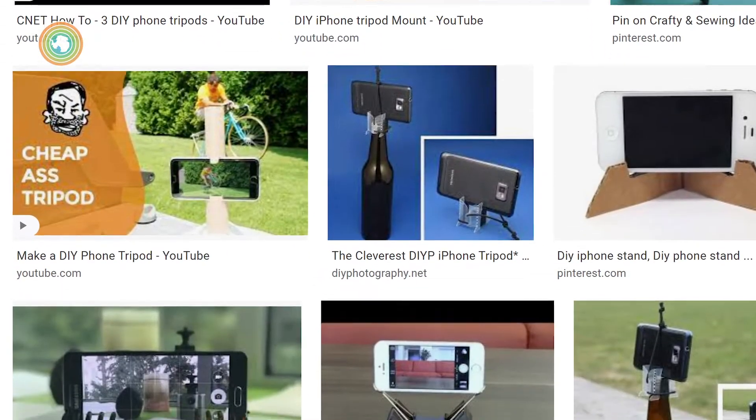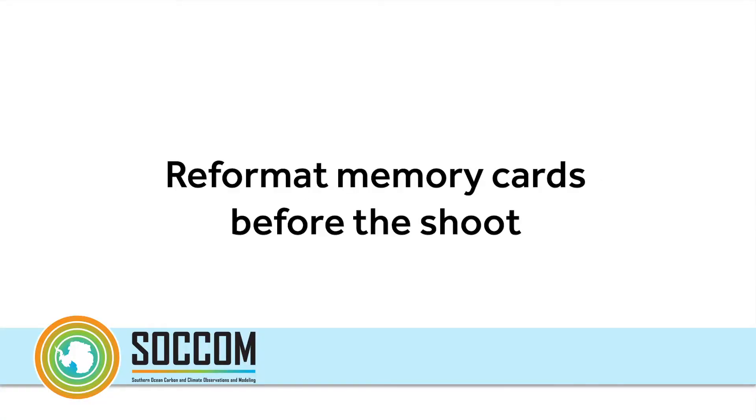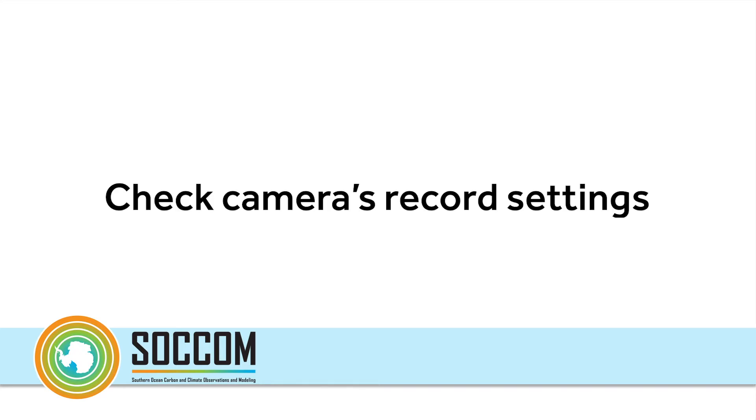Next, you'll need to stabilize your camera. Remember, no handheld footage. If you have a tripod, you're all set. No tripod? Get creative or do a Google search — there is a whole world of homegrown camera stabilization solutions you can make for free. When setting up the camera, always use fresh batteries and a freshly formatted memory card. Check your record settings and clean your lens. Please, don't shoot vertical video.